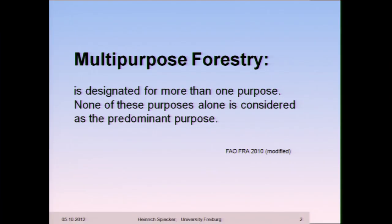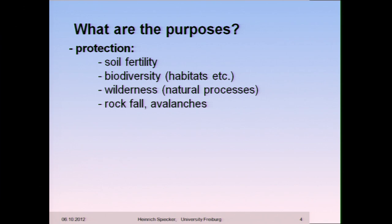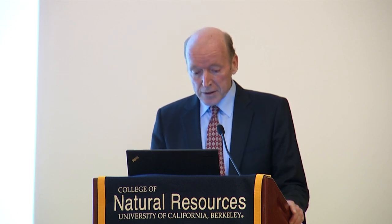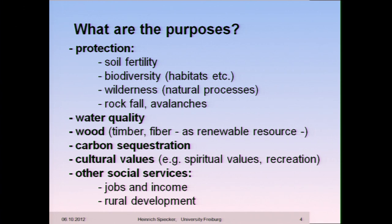I'm not sure whether my talk about multi-purpose forestry fits exactly to California — I'll put it in a wider, worldwide perspective. First of all, what does multi-purpose mean? It means not only one purpose, but several purposes taken into account. Opposed to this is specialized forestry, designated primarily for just one purpose — wood production, protection, or recreation. The purposes include protection against erosion and rockfall, biodiversity, wilderness, water quality, timber and fiber, carbon sequestration, cultural and spiritual values, recreational values, and jobs, income, and rural development.